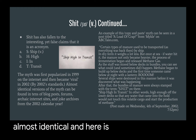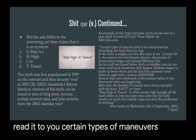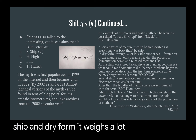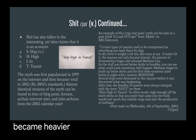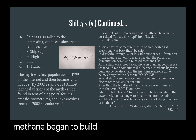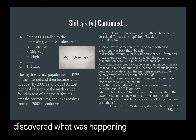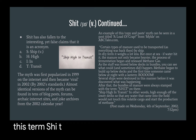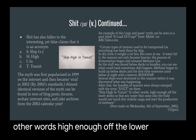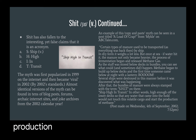Here is one example from ABC Tales. Some guy named Michael wrote on September 4th, 2002, this little tale: 'Certain types of manure used to be transported, as everything was back then, by ship. In dry form it weighs a lot less, but once at sea, if water hit it, the manure not only became heavier, but the process of fermentation began and released methane gas. As the stuff was stored below decks in bundles, you can see what could, and sometimes did, happen. Methane began to build up below decks, and the first time someone came below at night with a lantern — boom! Several ships were destroyed in this manner before it was discovered what was happening. After that, the bundles of manure were always stamped with this term, S-H-I-T, ship high in transit — in other words, high enough off the lower decks so that any water that came into the hold would not touch this volatile cargo and start the production of methane.' Now, I would love this to be true. That would be the most amazing thing. But unfortunately, it's not. And it breaks my little heart.